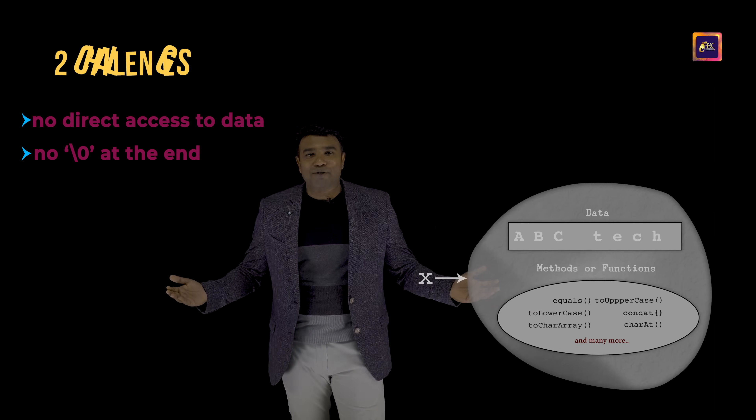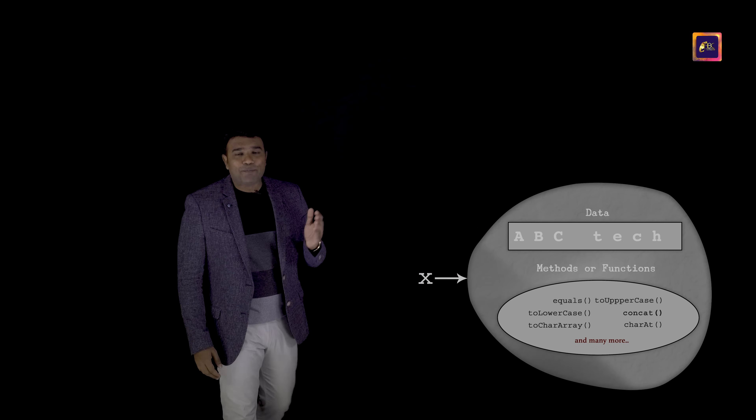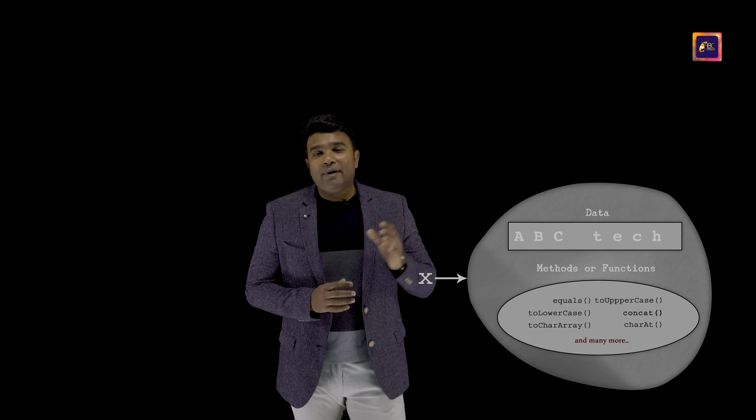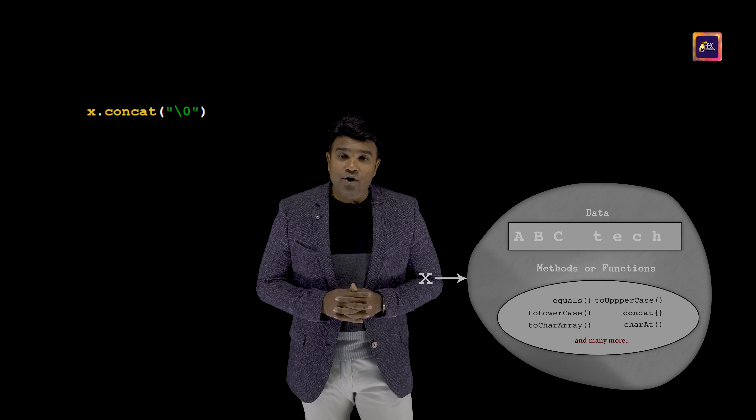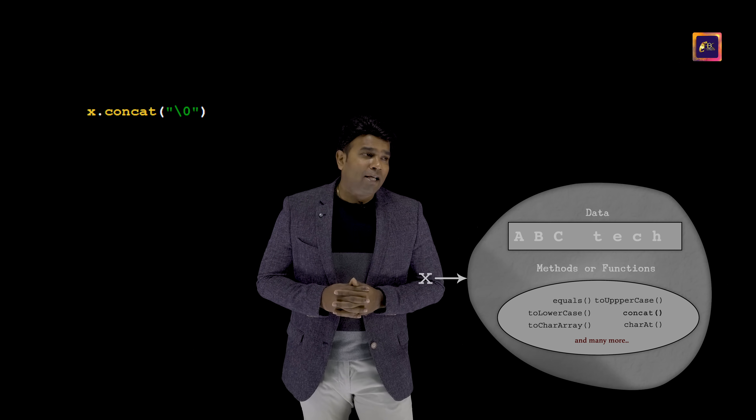For both these challenges, I'll give you the solution. I can tackle my challenges by making use of the inbuilt methods. There is an inbuilt method called concat. Using concat, I can certainly attach a null to the end of my data ABC-tech. If I have to call concat, I will have to make use of my reference x. The syntax in Java is: reference name dot method name. So if I say x dot concat of null, the inbuilt method concat is going to attach null towards the end of the data.